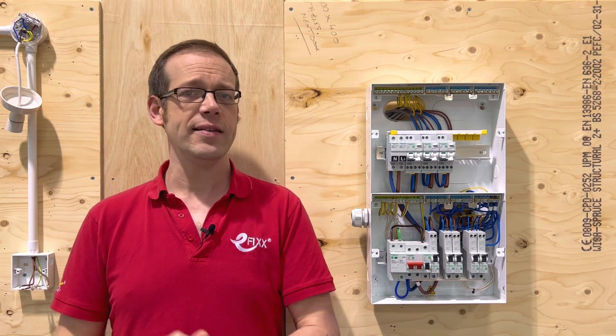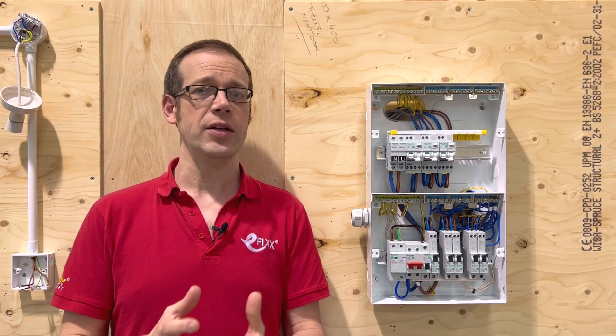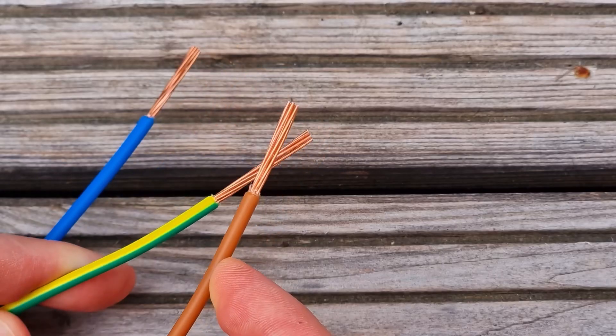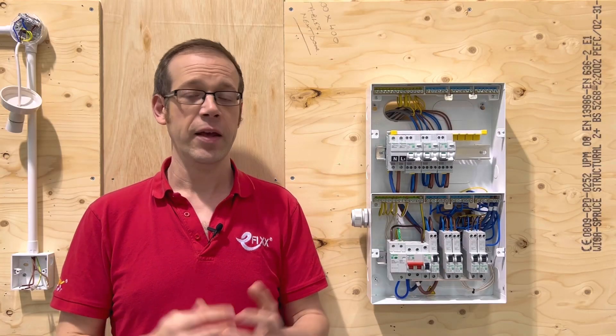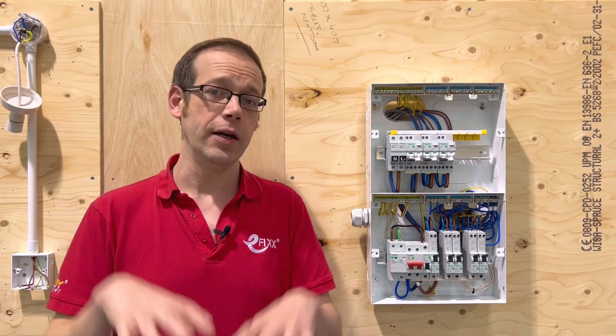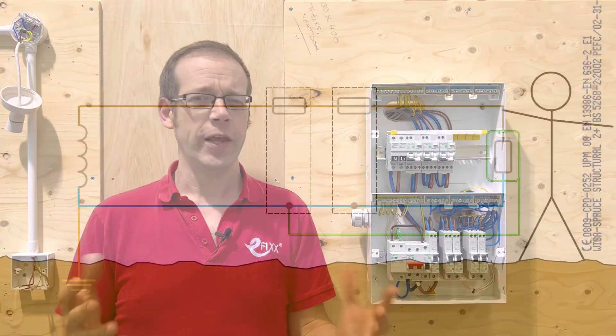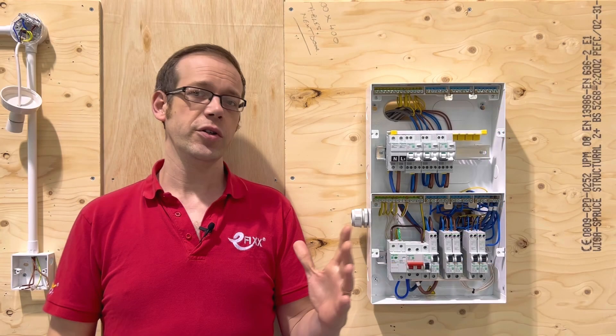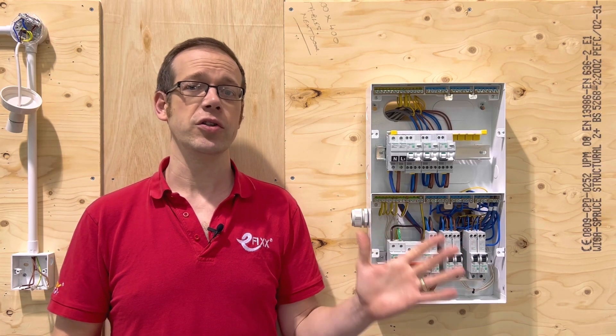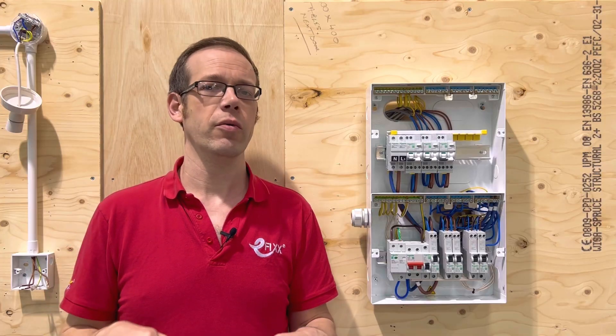But what is this additional protection that it offers? Well when we were discussing MCBs we mentioned what happens when a line conductor comes into contact with a CPC or an earthing conductor. The resistance of the circuit becomes very low, current flow therefore becomes very high and the MCB disconnects quickly. But does the same thing happen when a person comes into contact with a line conductor? Well when someone touches a line conductor they generally will receive a shock to earth.